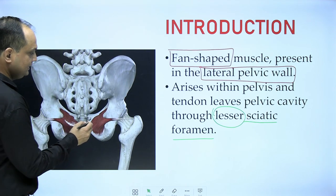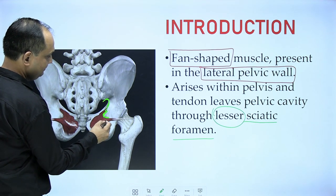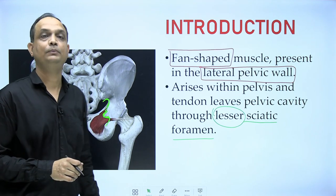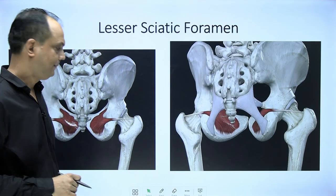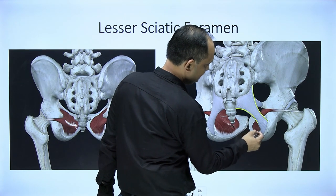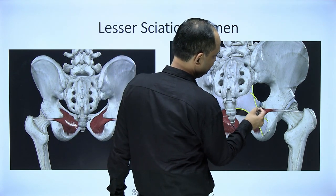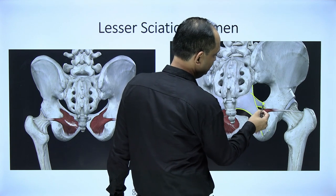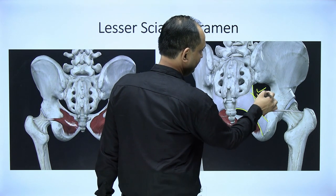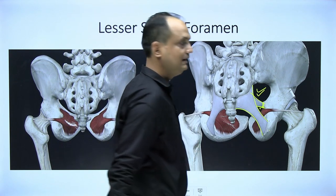Here you can see the ischial spine; above the ischial spine you have the greater sciatic notch, and below you have the lesser sciatic notch. These notches are converted into foramina with the help of ligaments. The sacrotuberous ligament connects the ischial tuberosity to the sacrum, and the sacrospinous ligament goes to the ischial spine, creating the greater and lesser sciatic foramina.